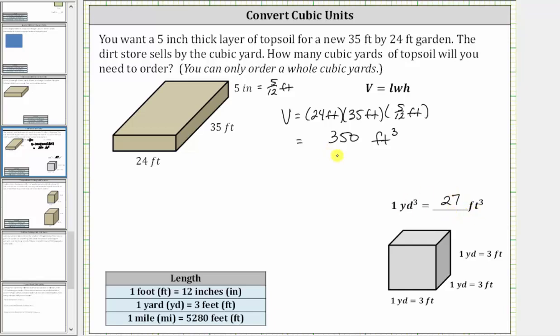Let's use this to convert 350 cubic feet to cubic yards. First write 350 cubic feet as a fraction with the denominator of one. Now we will multiply by a unit fraction to convert cubic feet to cubic yards. Because we have feet in the numerator and we want cubic feet to simplify out, we must have cubic feet in the denominator of the unit fraction and cubic yards in the numerator. Since one cubic yard is equal to 27 cubic feet, the unit fraction is one cubic yard over 27 cubic feet.